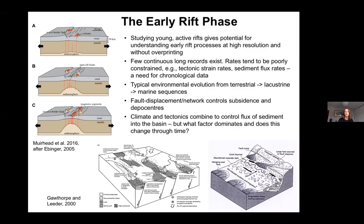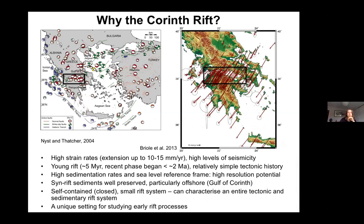Looking at some general figures, the evolution of the rift and the environmental changes from predominantly terrestrial through to lake and finally marine systems are illustrated here. So why study the Corinth Rift? This area has a really high strain rate. You can see the Aegean region with a concentration of earthquakes in the Gulf of Corinth area, and GPS vectors on the right-hand side showing up to 15 to 20 millimeters per year — some of the highest extension rates on Earth — and high levels of seismicity.